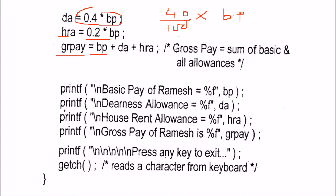You can write a comment showing what needs to be done or what we have done here. Then you can print the basic salary using printf with a %f format specifier, since all variables have been declared as float.